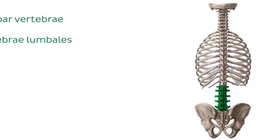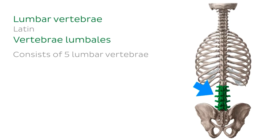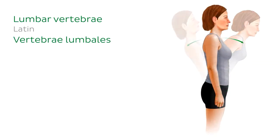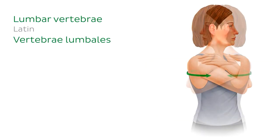Moving further down the vertebral column, we can see the lumbar spine. The lumbar spine consists of five lumbar vertebrae, which are the largest vertebrae of the spine due to the fact that they support the weight of the upper body. The lumbar spine is more mobile than the thoracic spine, and is responsible for movements including flexion, extension, lateral flexion, and some rotation.